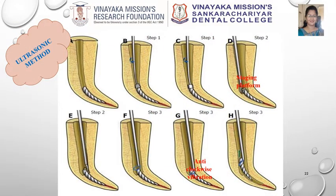First is the ultrasonic method. The dentin hindering the straight-line axis is removed using files. A staging platform is created around the exposed part of the separated instrument. Then using ultrasonics, vibrate the exposed part of the separated instrument in an anti-clockwise direction so that it will unwind and pop out from the canal.